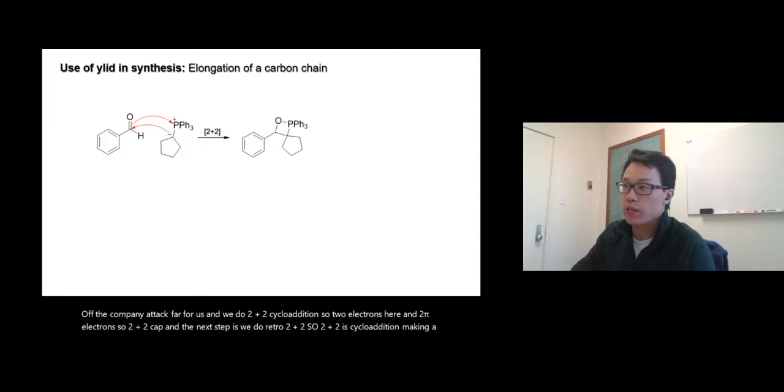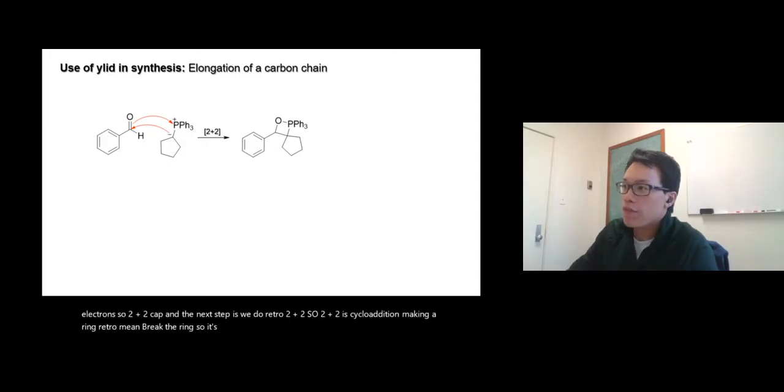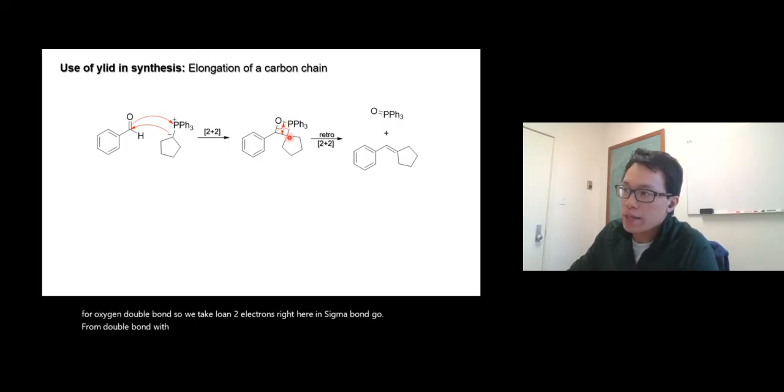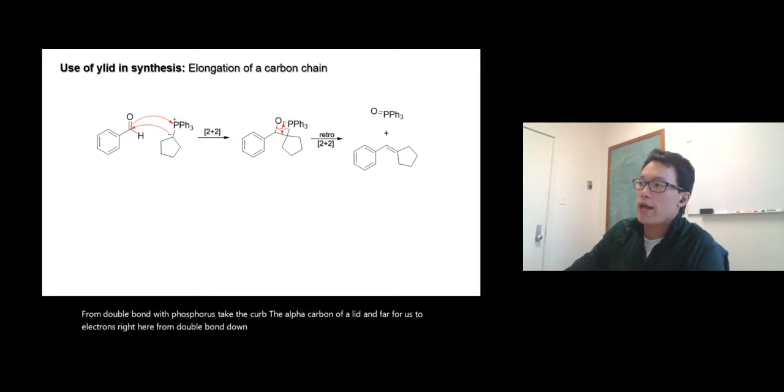We're going to form a phosphorus-oxygen double bond. We take two electrons from the sigma bond and form a double bond with the phosphorus. Take the alpha carbon of ylide and the two electrons from the double bond down there. You get a double bond like that plus the byproduct triphenylphosphine oxide.